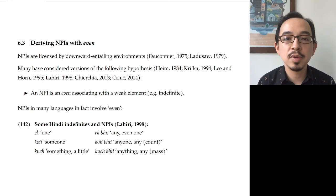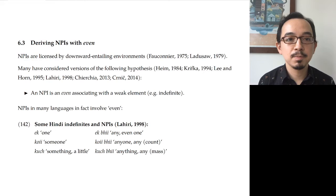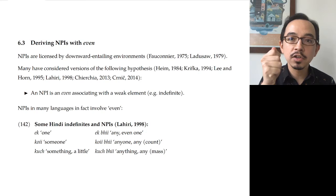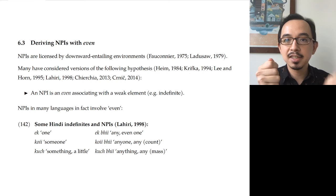The third case study has to do with the fact that scalar particles commonly appear in the construction or morphology of NPIs. NPIs are licensed in downward entailing environments, and many authors have considered the hypothesis that an NPI is an overt or covert even together with an element which is weak on a scale — roughly, an indefinite.